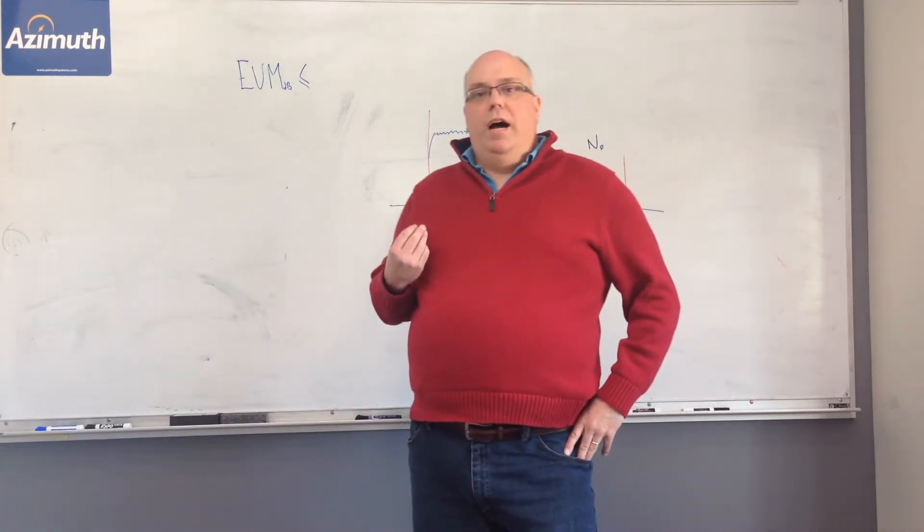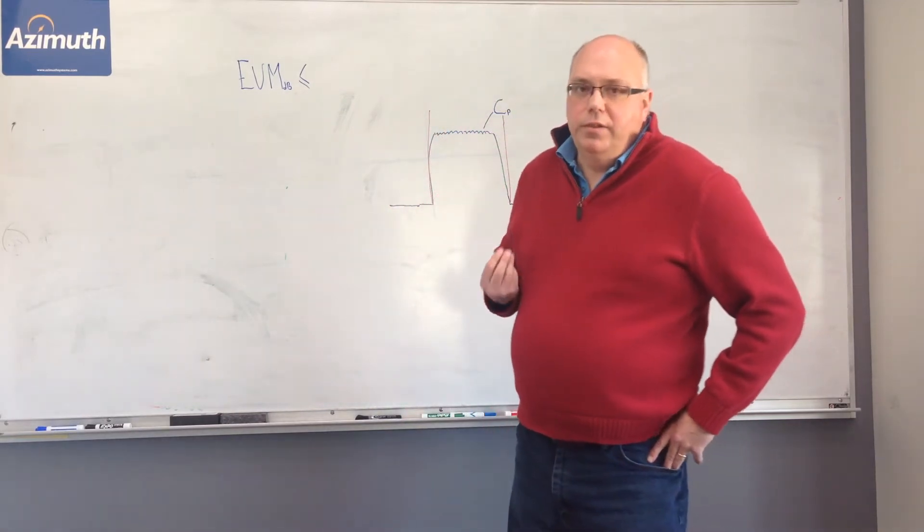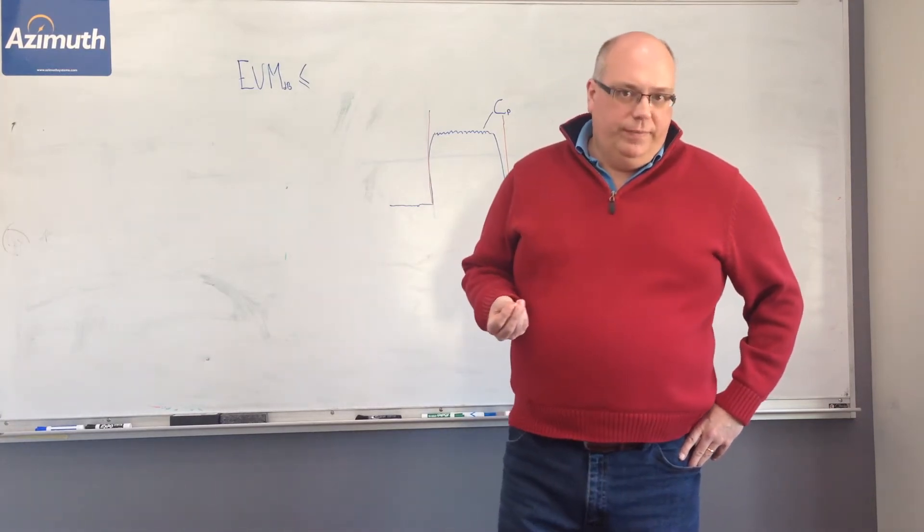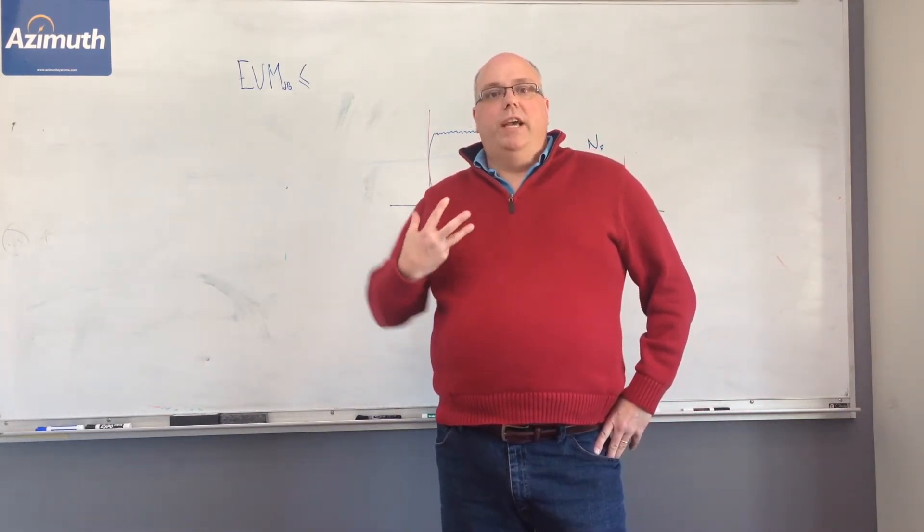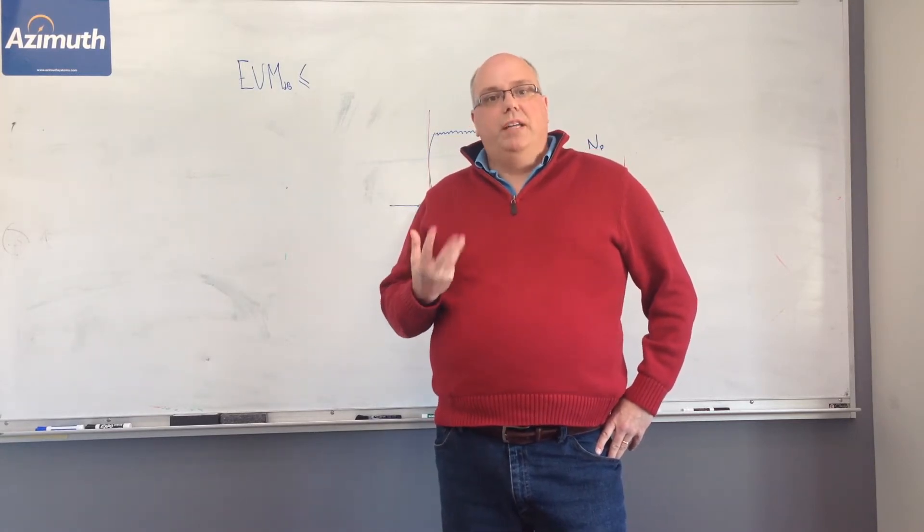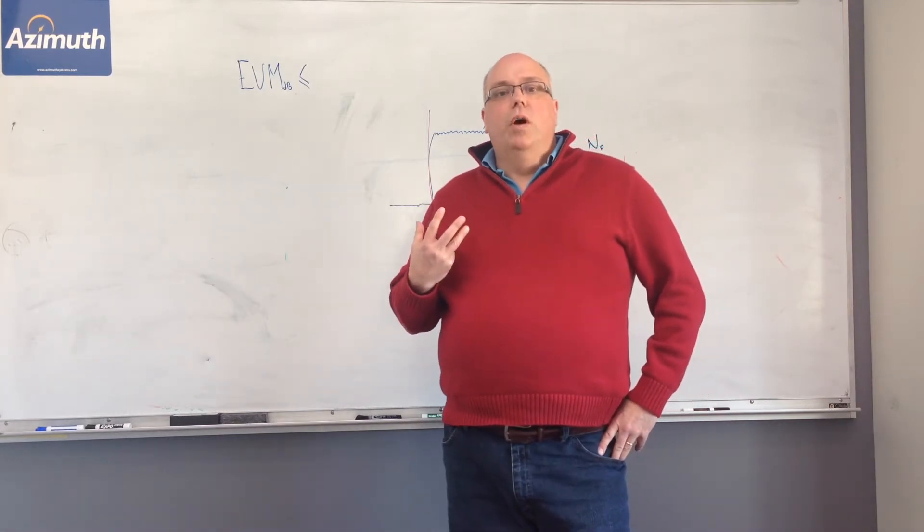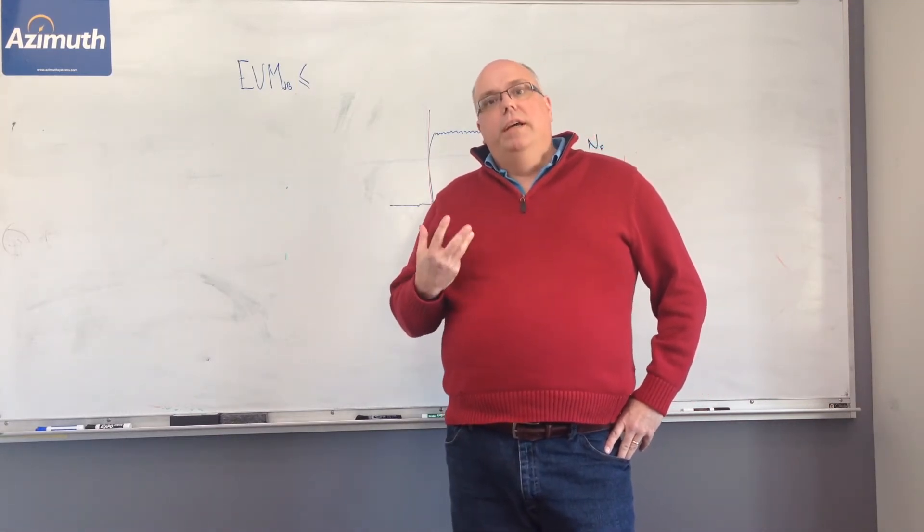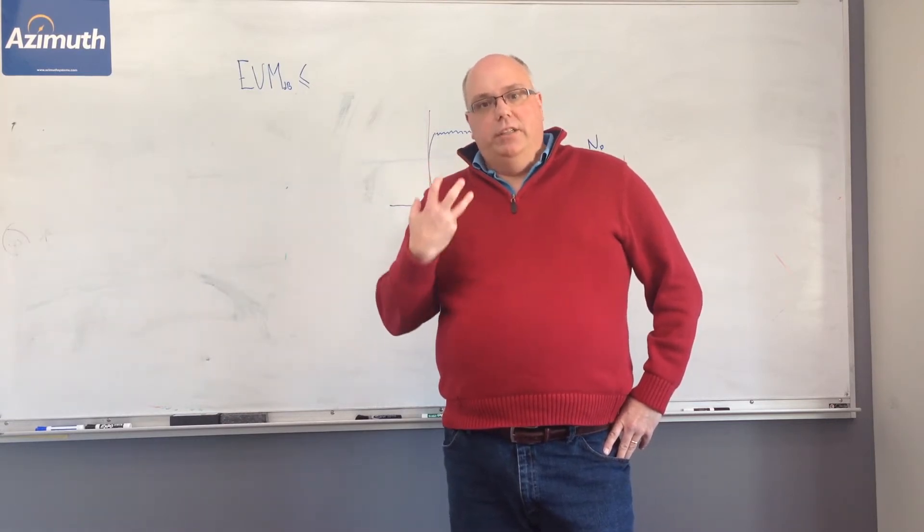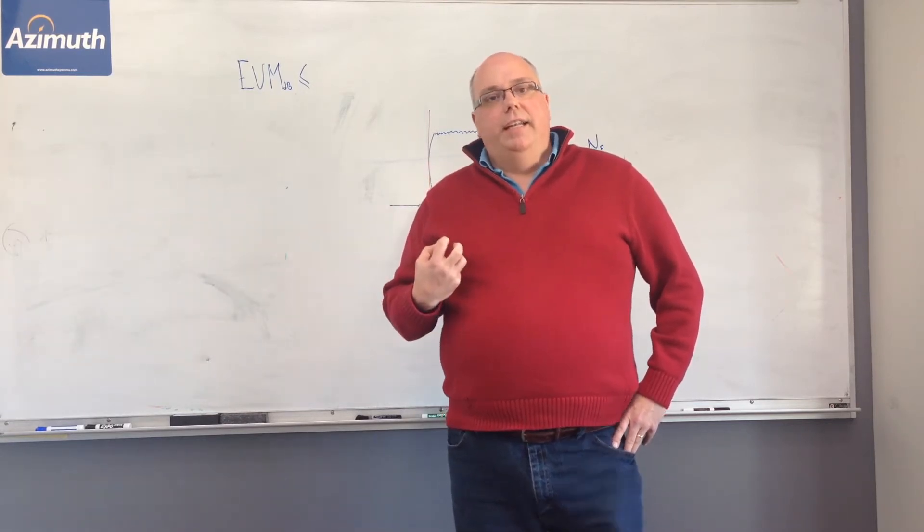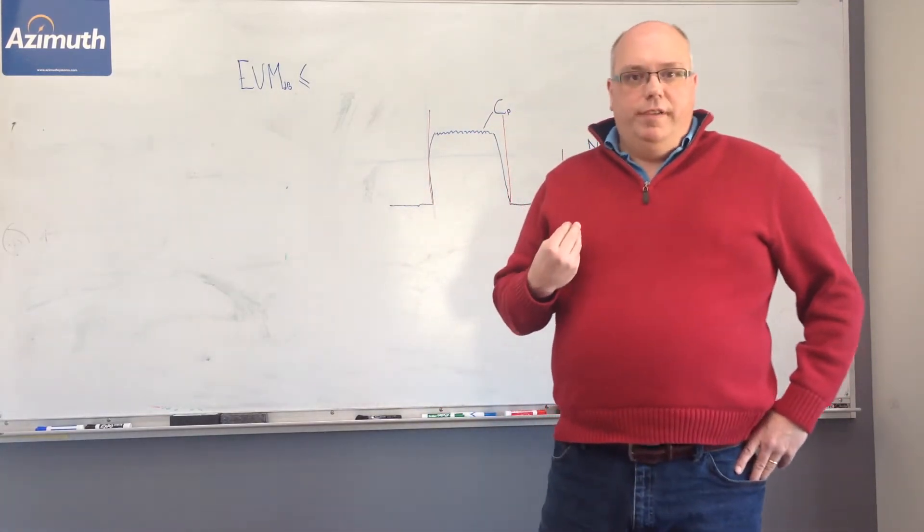We're going to talk a little bit more about how do you measure that. EVM is measured with a piece of equipment called a vector signal analyzer. And that vector signal analyzer basically is as close as possible an ideal receiver that has the ability to properly decode the received digital carrier and compare it against an ideal digital carrier. And given that ability, it has the ability to directly measure EVM.